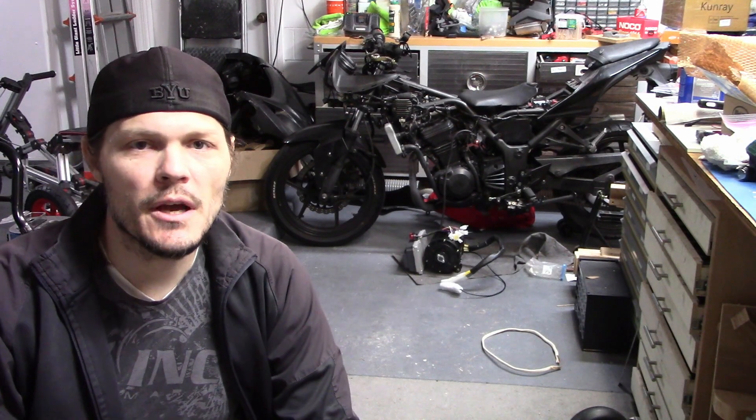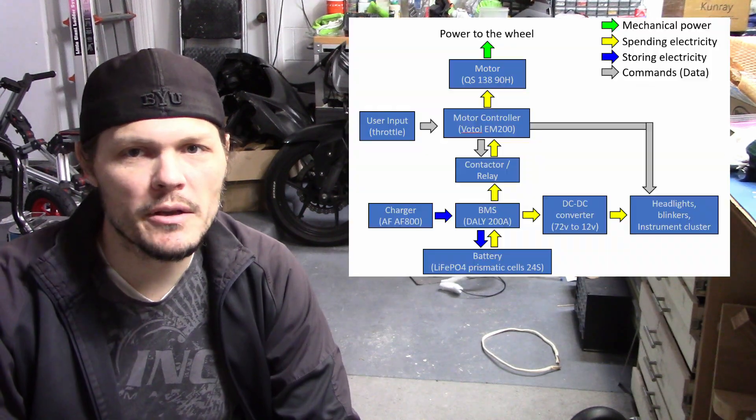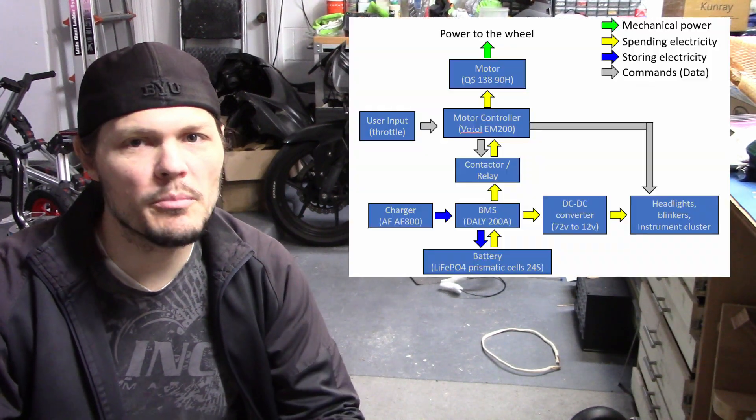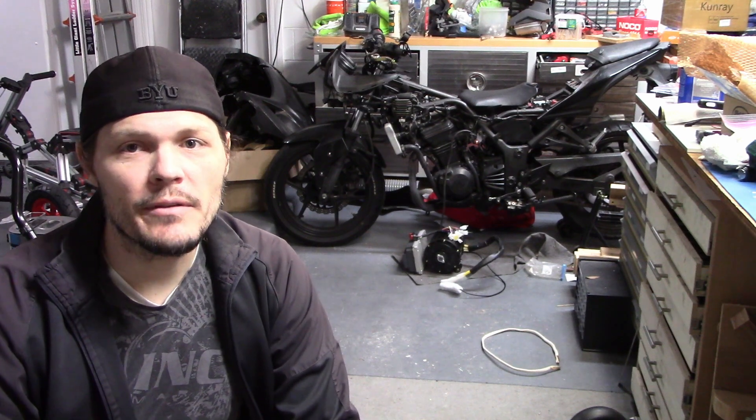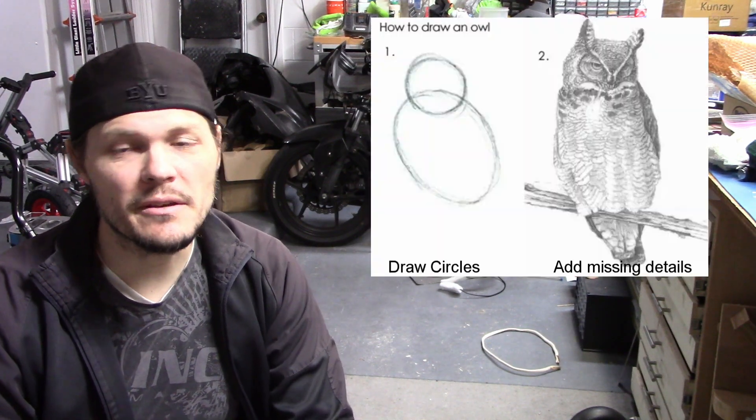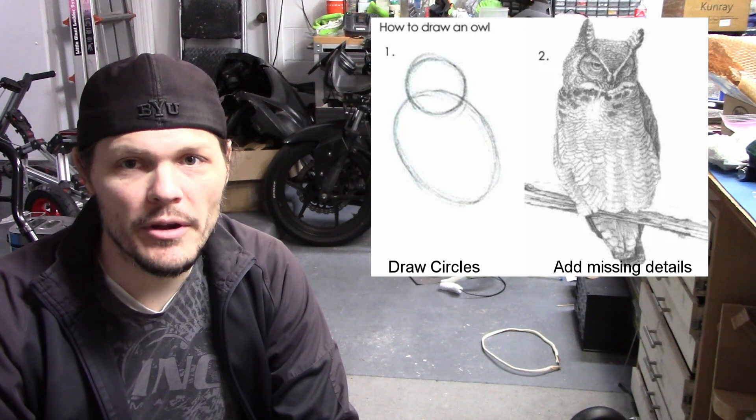In the first video of this series, I put together an oversimplified block diagram that showed all the components that needed to go into an EV conversion. But as mentioned in that video, there is a lot of specifics missing from that oversimplified block diagram.